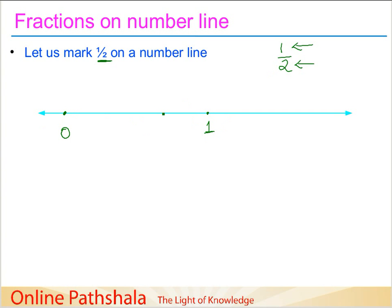Half will actually lie exactly between 0 and 1. The denominator 2 says the whole has to be divided into two parts. So we divide this unit by taking exactly the midpoint. We have divided the 1 into two parts: part 1 and part 2. We are representing one half, so we start from 0 and take the first part. At that point we have 1/2, which is half of it.